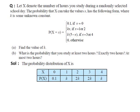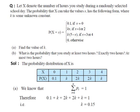We know that the sum of all probabilities in a probability distribution equals 1. Therefore, 0.1 + k + 2k + 2k + k = 1, so 0.1 + 6k = 1. Simplifying, we get k = 0.15.